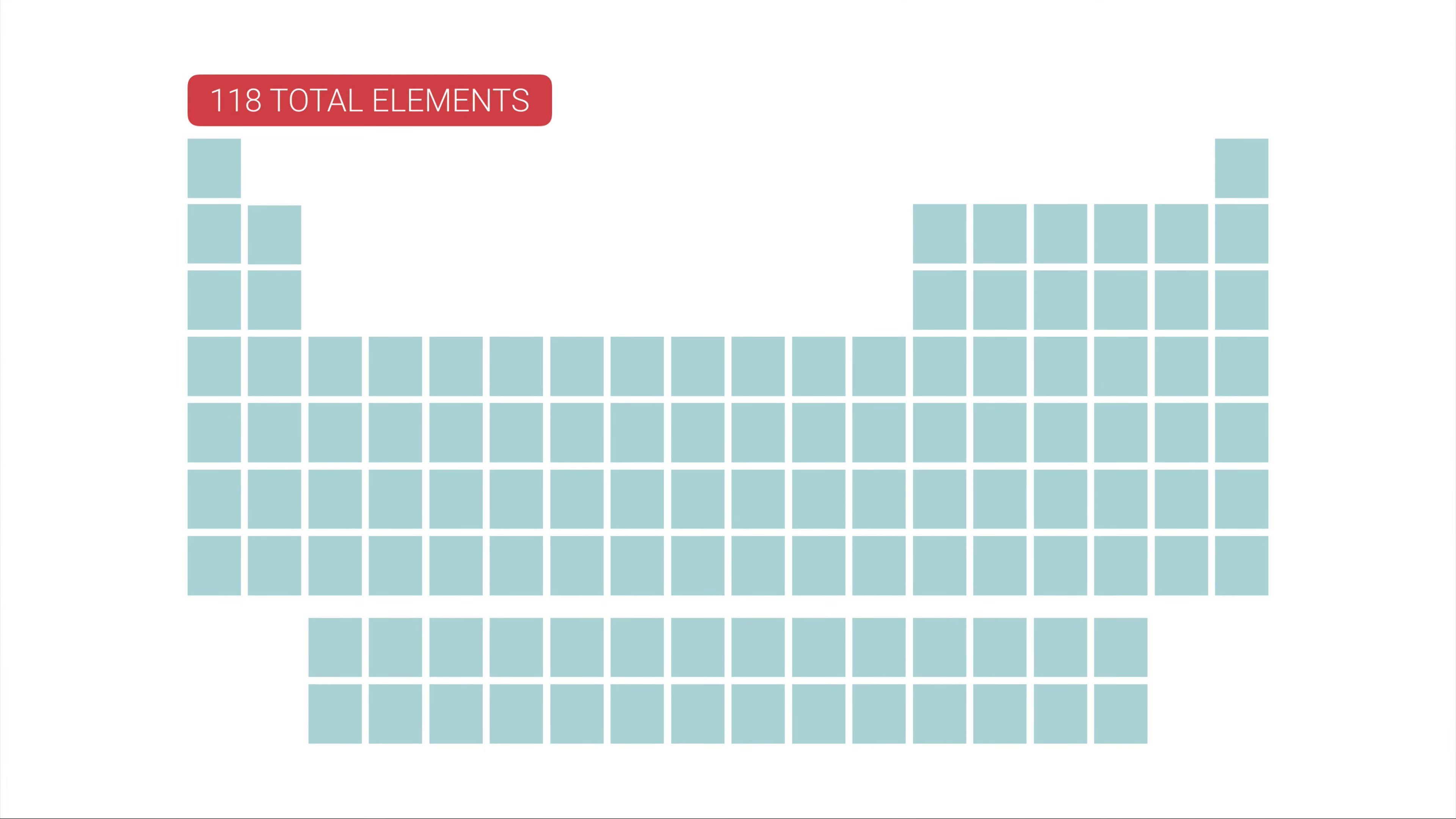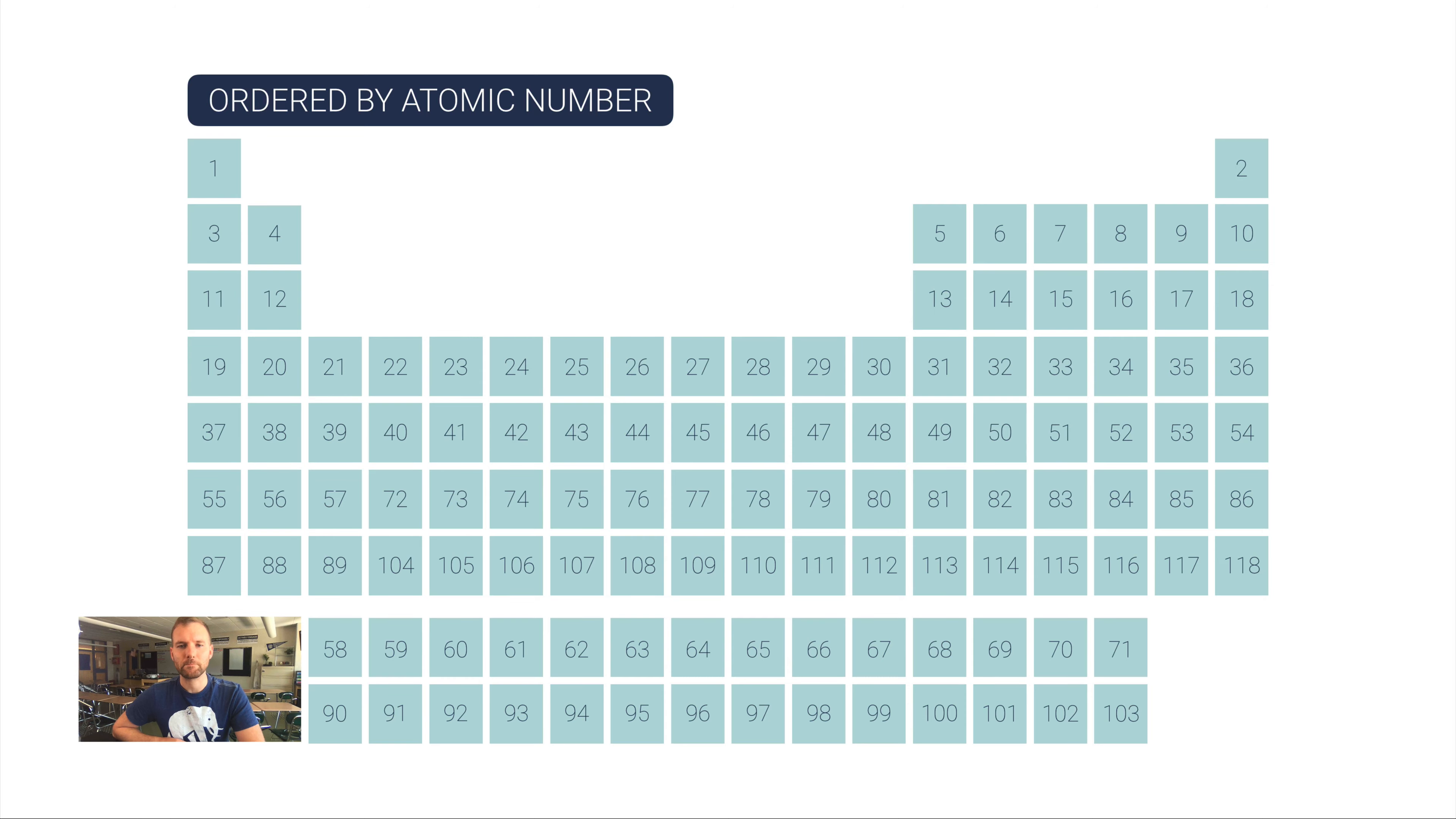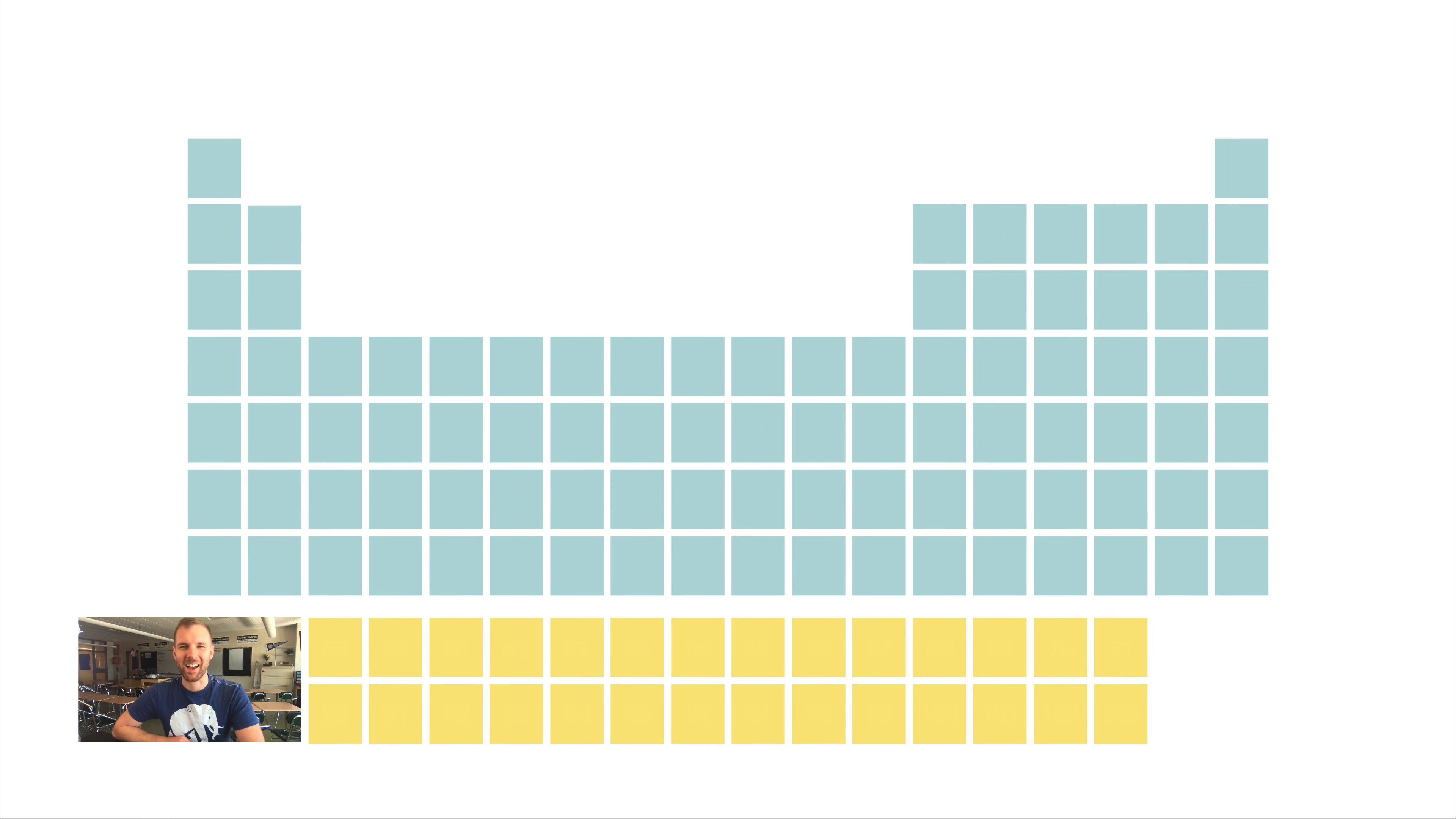So here's how the periodic table is laid out. There are 118 total elements and they're all numbered by their atomic number, which is the number of protons.